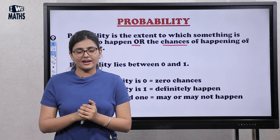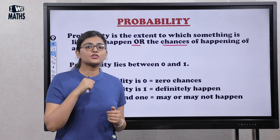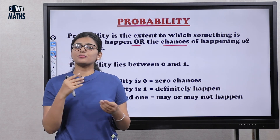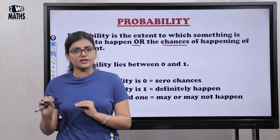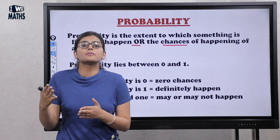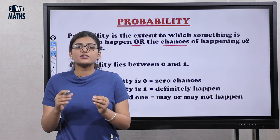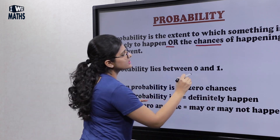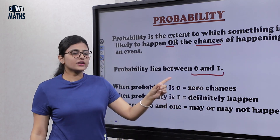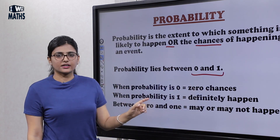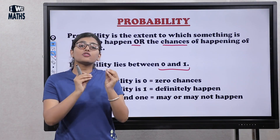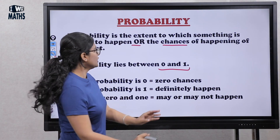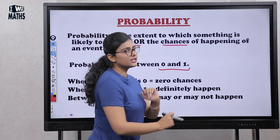Then you have another friend. You asked him if he will pass. He says, 'I will definitely top.' That means the chances of passing are full. So the probability lies between zero and one. If that event is impossible, its probability will be zero. If that event will definitely happen, then its probability will be one.